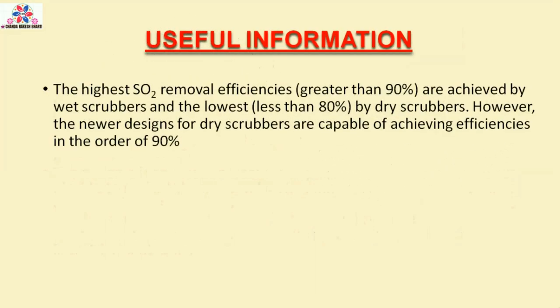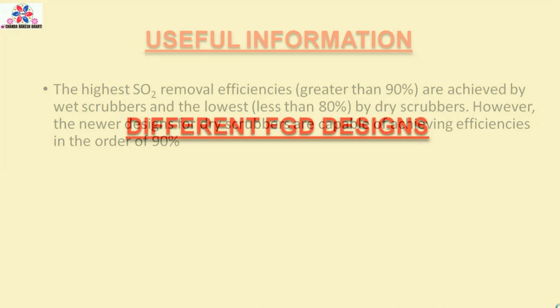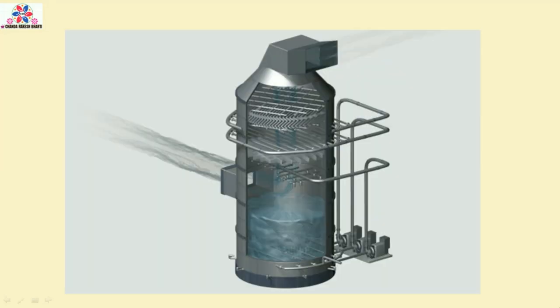The highest SO2 removal efficiencies — greater than 90% — are achieved by wet scrubbers, and the lowest — less than 80% — by dry scrubbers. However, the newer designs for dry scrubbers are capable of achieving efficiencies in the order of 90%.